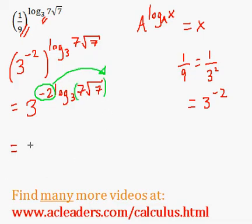So that's going to look like this: 3 to the power of log base 3 of 7 root 7 to the power of negative 2.